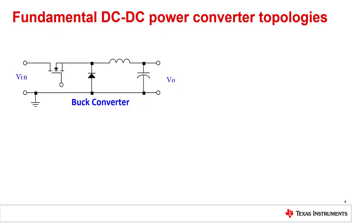So let's start with some topology basics. Here you can see the schematic of a buck converter, also called step-down converter. It consists of three main components: the transistor, the diode, and the inductor. The input voltage is always bigger than the output voltage.